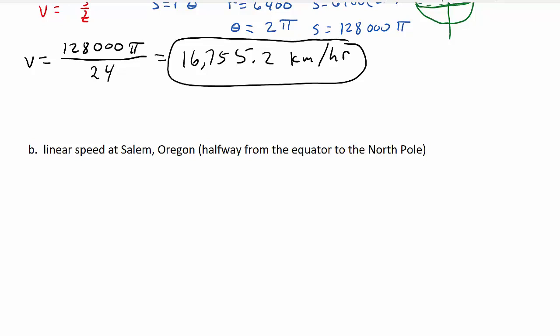Let's take a look at the next part. We've got the linear speed at Salem, Oregon, and it's halfway from the equator to the North Pole. So let's go ahead and write our formula. Linear velocity is S over T. And we know S is R times theta. So let's come over here and draw a picture.